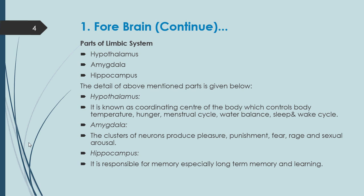Now let's discuss amygdala. The amygdala is a cluster of neurons that produces pleasure, punishment, fear, rage, and sexual arousal. So this cluster of neurons — this group of neurons — is responsible for producing all of these responses.